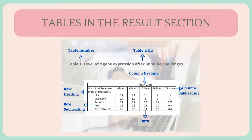Tables in the results section include: the table number, table title, row headings (for example, groups), column headings, data, row subheadings (for example, categories or groups), column subheadings (for example, categories or variables), and footnotes (for example, statistical analysis).